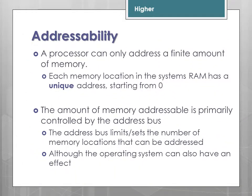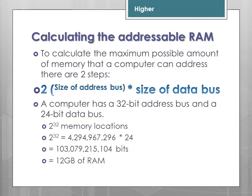A processor can only address a finite amount of memory. Think of it like houses on a street — you can only have so many houses, and the longer the street, the more addresses you need. Every location in memory has a unique address. The amount of memory addressable is primarily controlled by the address bus, which sets the number of memory locations that can be addressed. To calculate the maximum addressable memory, you do two steps: raise 2 to the power of the address bus width to get the number of locations, then multiply by the word length, which is typically the size of the data bus.